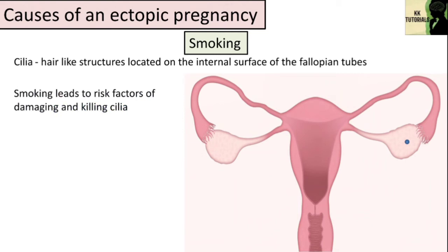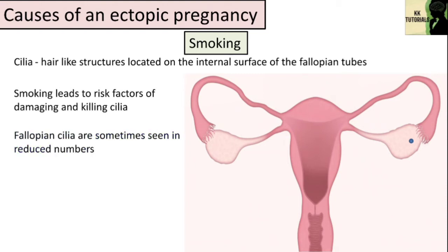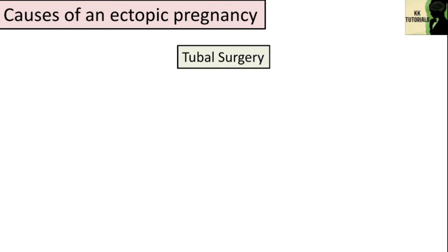Fallopian cilia are sometimes seen in reduced numbers, leading to the hypothesis that cilia damage in the fallopian tube is likely to lead to ectopic pregnancy. As cilia degenerate, the amount of time it takes for the fertilized egg to reach the uterus increases. If the fertilized egg doesn't reach the uterus in time, it will implant itself inside the fallopian tube, thus causing the ectopic pregnancy.